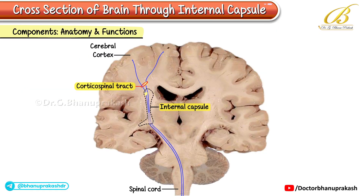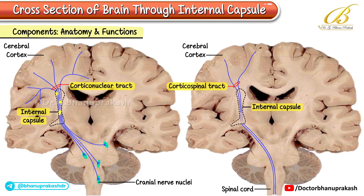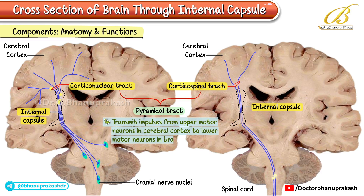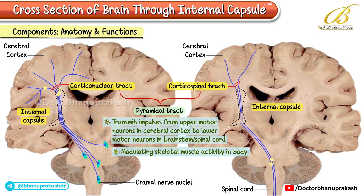The corticospinal and corticonuclear tracts, collectively known as the pyramidal tract, form a significant portion of the internal capsule. They transmit impulses from the upper motor neurons in the cerebral cortex to the lower motor neurons in the brain stem and spinal cord, modulating skeletal muscle activity in the body.